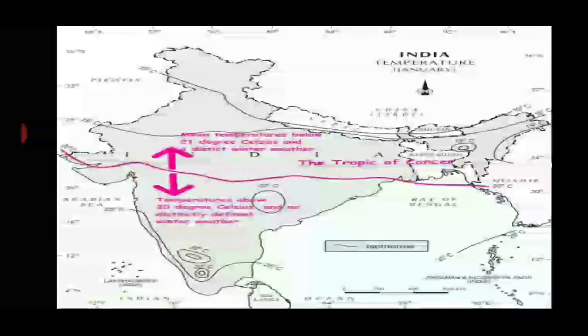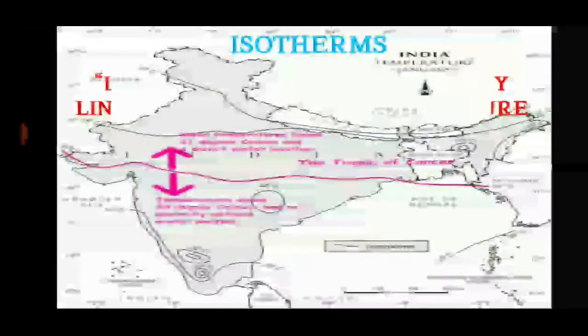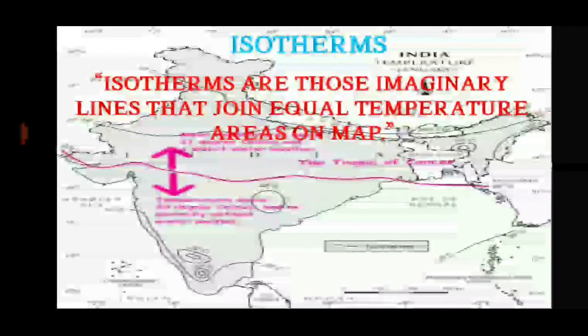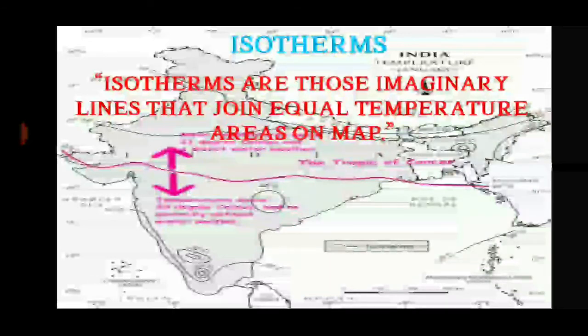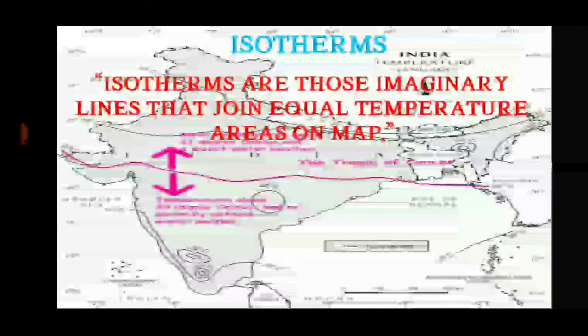Isotherms are imaginary lines that join equal temperature areas on a map. In the background, a map representation is shown where these lines are drawn connecting equal temperatures at a specific time period throughout the country.